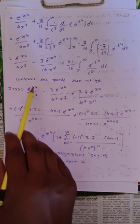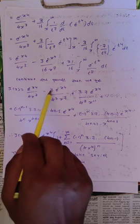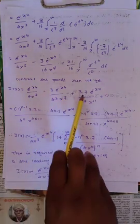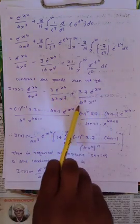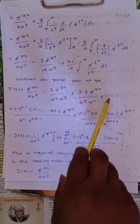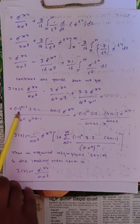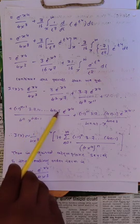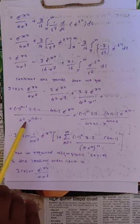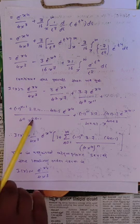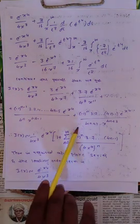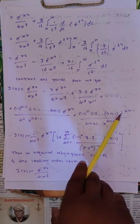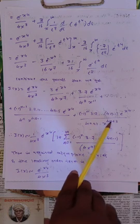Continuing like this, we get a series: I(x) equals e^(-x^4)/(4x³) minus 3·e^(-x^4)/(4²·x^7) plus 3·7·e^(-x^4)/(4·x^11) plus and so on. The (n-1)-th term is (-1)^(n-1) times 3·7·11···(4n-1) times e^(-x^4) divided by 4^n times x^(4n-1). The n-th term is (-1)^n times 3·7···(4n-1) times e^(-x^4) divided by 4^(n+1) times x^(4n+3).